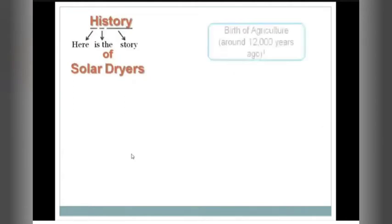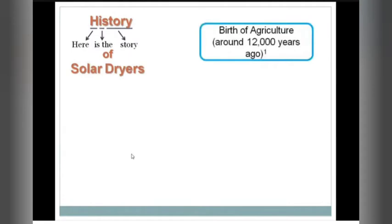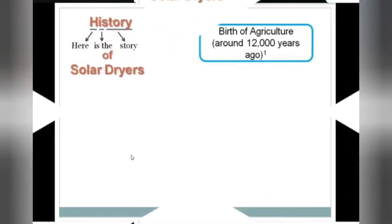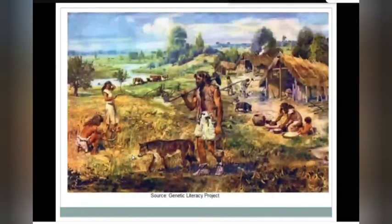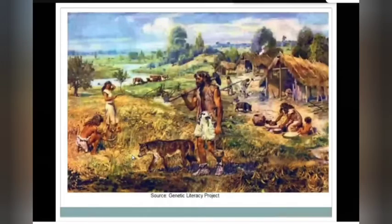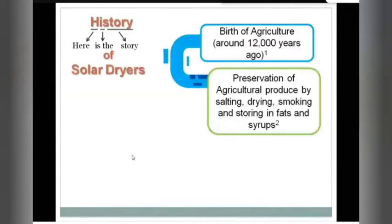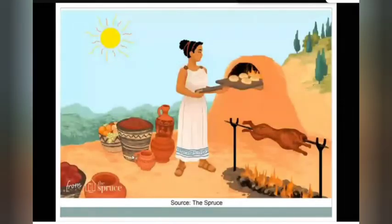For those history-loving people, here is the story of solar dryers. About 12,000 years ago, the birth of agriculture took place. Humans started establishing permanent civilizations, cultivating land, and producing food — but the problem was not just production, it was the preservation of food, because they were producing only for a limited period restricted to a particular season. For the rest of the year they had to wander in the forest to find food, so they started experimenting with preservation.